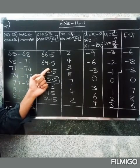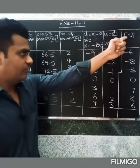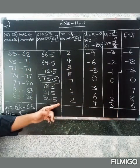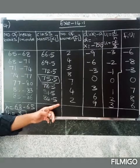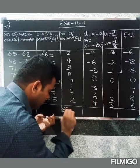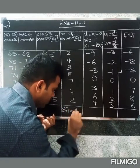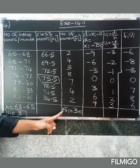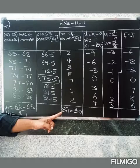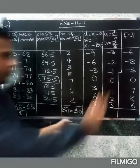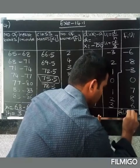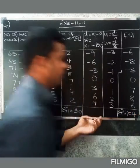Using the step deviation formula: Mean equals A plus summation of F·Ui divided by summation of F, into h. Summation F equals 30. Now for summation F·Ui, you have to add all values. Adding: 8 plus 7 gives 15, 15 plus 6 gives 21.